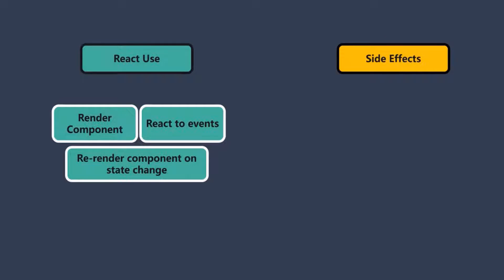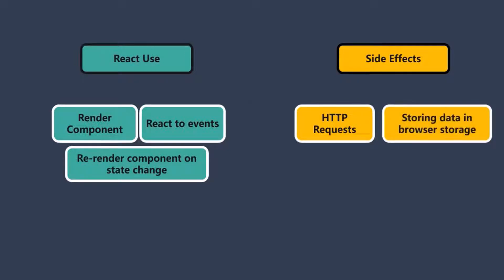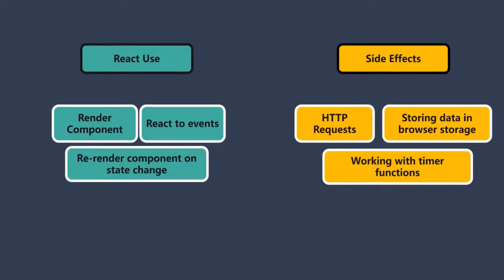Side effects can be everything that might be happening in your application which is not related to UI rendering. For example, sending an HTTP request to the server — when we send an HTTP request, we are not rendering anything in the UI. Another example of a side effect would be when we store something in the browser storage. Also, when we set timers or intervals in our code, this is also an example of a side effect.